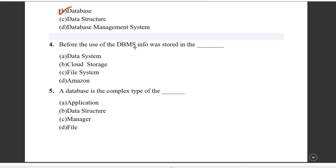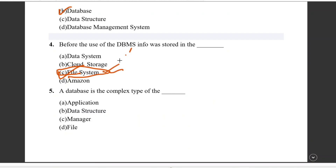Next: before the use of DBMS, information was stored in a file system. Before DBMS started, data was stored in a file system. The file system had drawbacks — it was a security concern, data was isolated, and there were data integrity problems. So the improved version is DBMS.